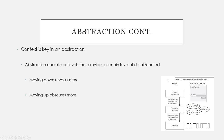So the takeaway on abstraction is that it's a spectrum. Context is key — depending on what you're abstracting, you may need to go higher or lower as needed. Moving down to low-level abstraction reveals a lot of information, while moving to a higher level of abstraction reveals less information.